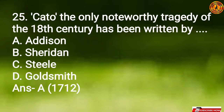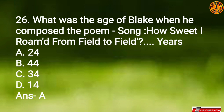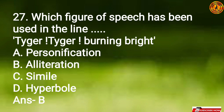Question 24: 'An Essay on Criticism' has been written by Alexander Pope. Question 25: 'Cato,' the only noteworthy tragedy of the 18th century, has been written by Option A, Addison. Question 26: What was Blake's age when he composed the poem 'Song: How Sweet I Roamed from Field to Field'? Option A, 14 years. Question 27: Which figure of speech is used in 'Tiger, Tiger, burning bright'? This is repetition of consonant sound, so it is Option B, alliteration.